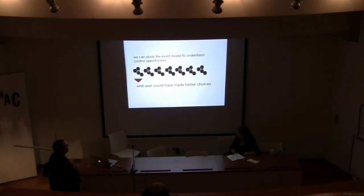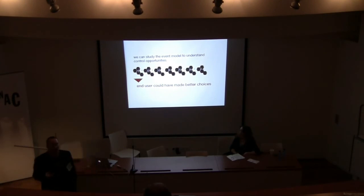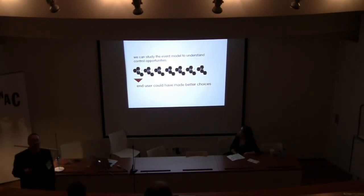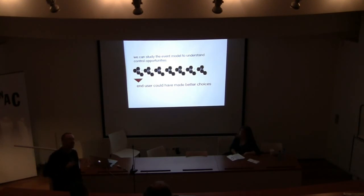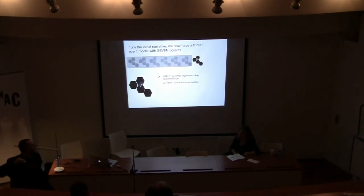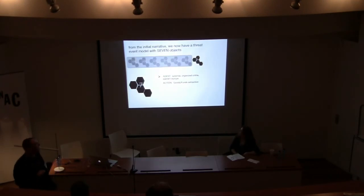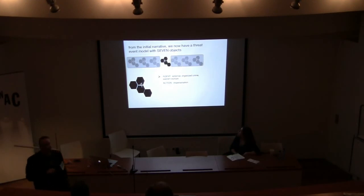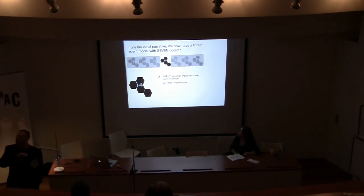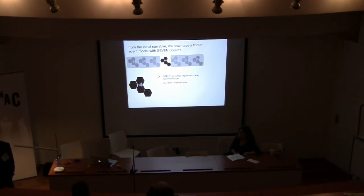What's great is we can use a model to understand the points at which we could have applied better controls. A question came up: from events four to seven, why haven't we considered any asset impact? Those are fraud events and you certainly could extend VERIS to cover them, but Allison and I haven't had time to extend it carefully. In my mind, the asset in that case would be a digital asset.